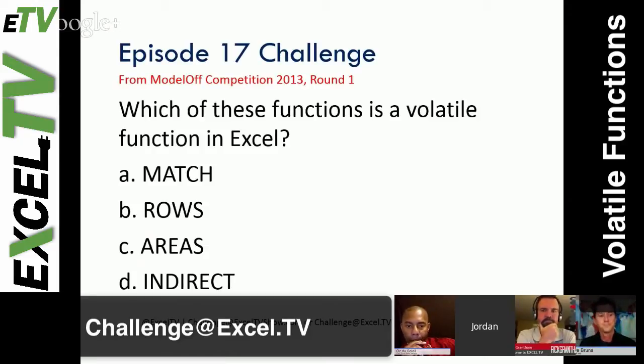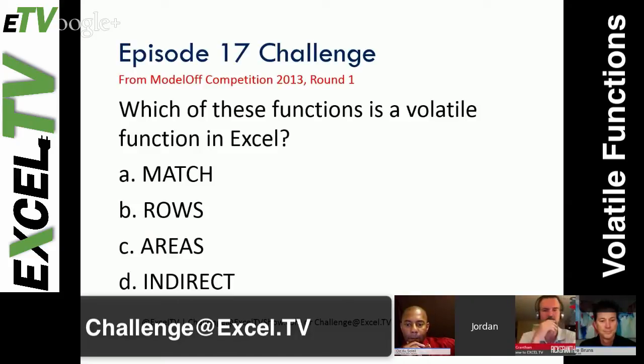Which of these functions is a volatile function in Excel? Match, Rows, Areas, or Indirect? And if you want, you can write in your own answer.